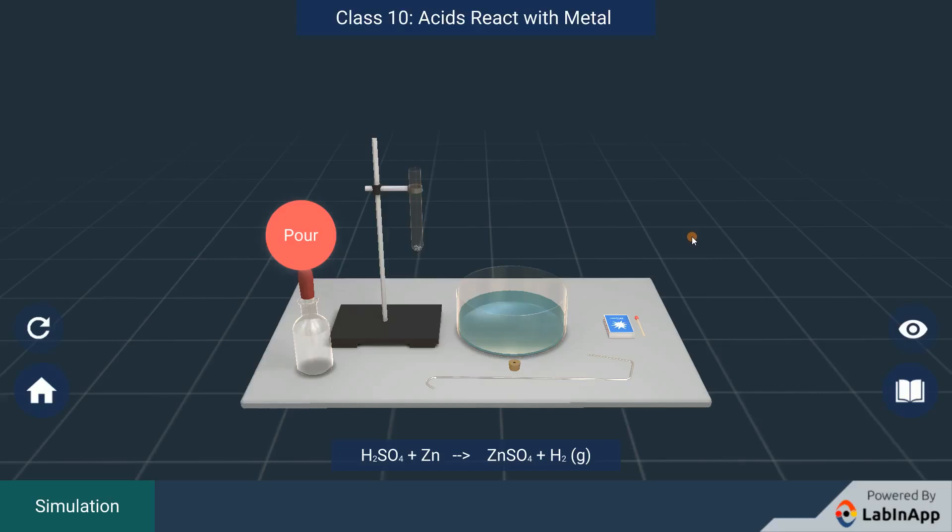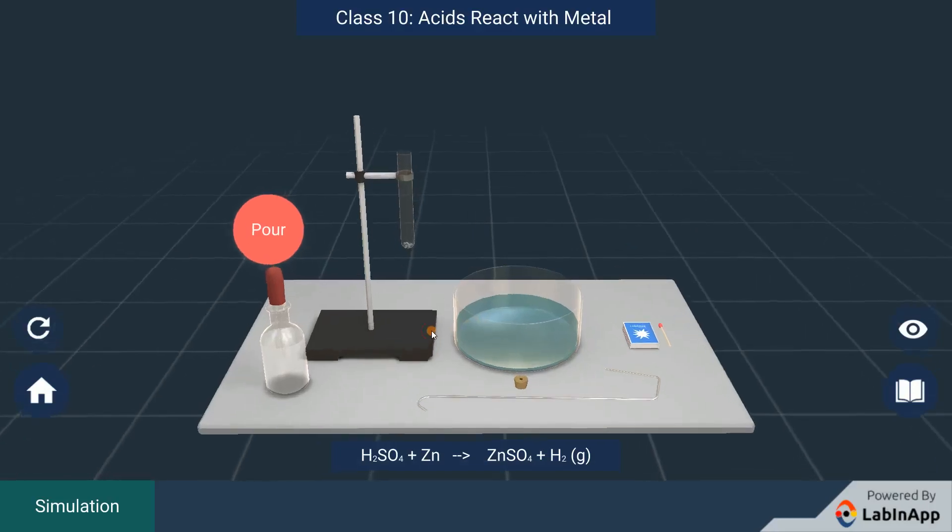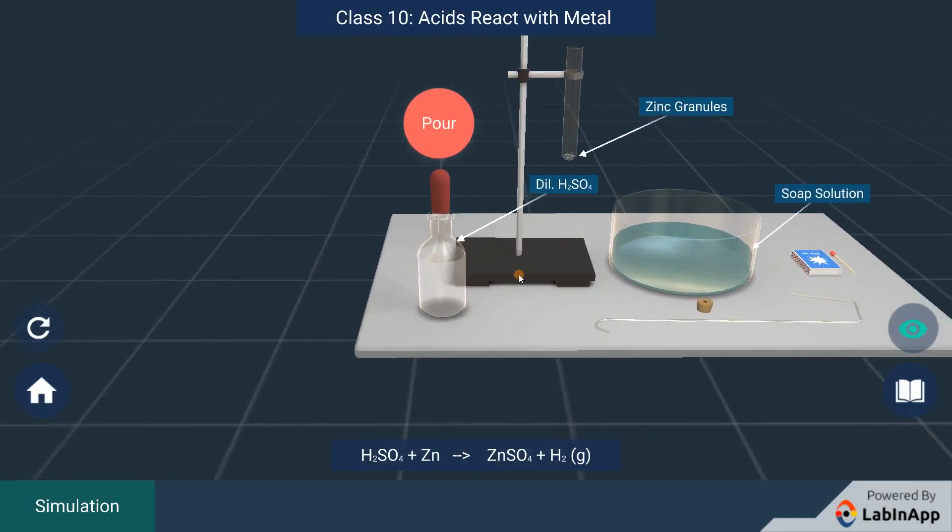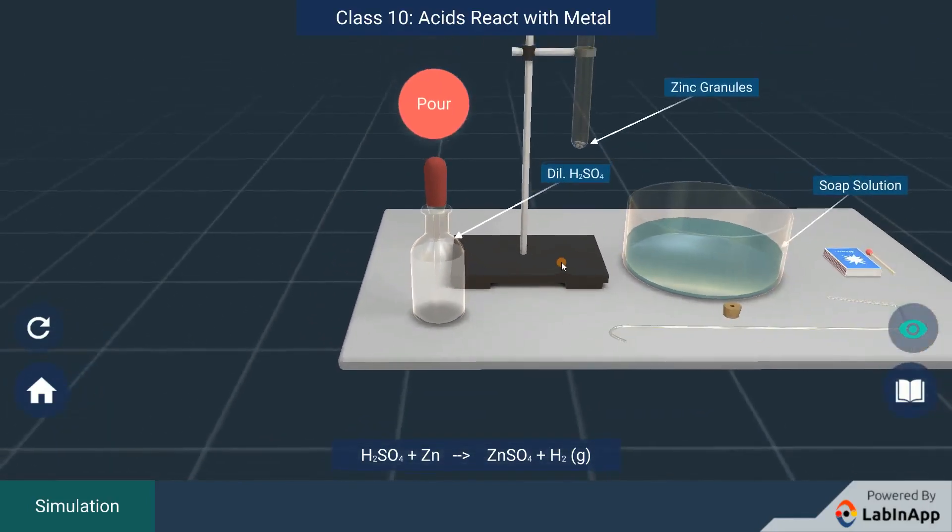Acids react with metal. What will happen when acids react with metals? Let's see this through an activity. We have taken dilute sulfuric acid, zinc granules, and soap solution.